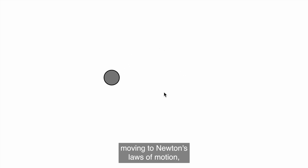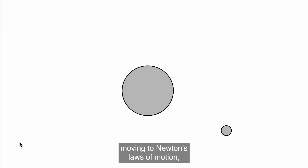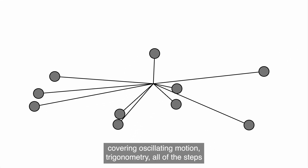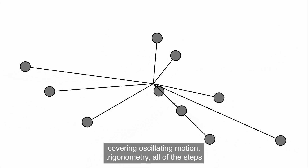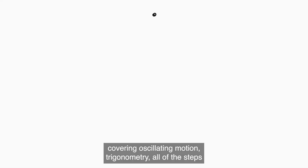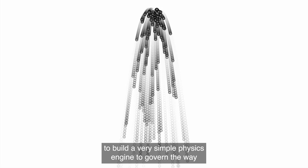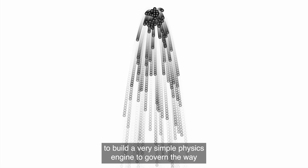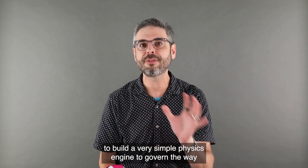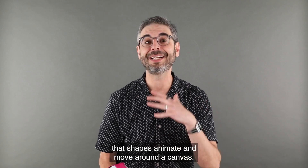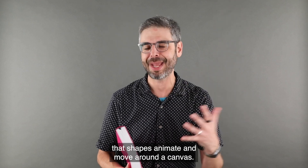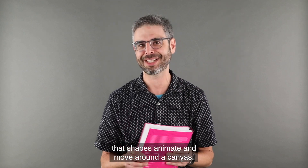Starting with the concept of a vector, moving to Newton's laws of motion, covering oscillating motion, trigonometry — all of the steps to build a very simple physics engine to govern the way that shapes animate and move around a canvas.